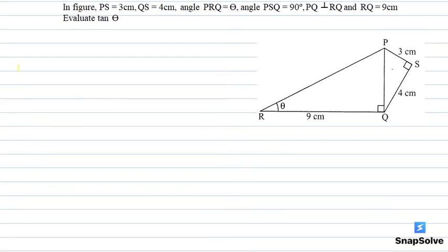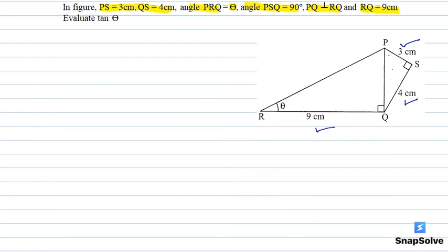Hello everyone. According to the given diagram, the value of PS is 3 centimeters, QS is 4 centimeters, angle PRQ is theta, angle PSQ is 90 degrees, PQ is perpendicular to RQ, and the length of RQ is 9 centimeters. We can see the angle between PS and QS is 90 degrees, and we have to find out the value of tan theta.